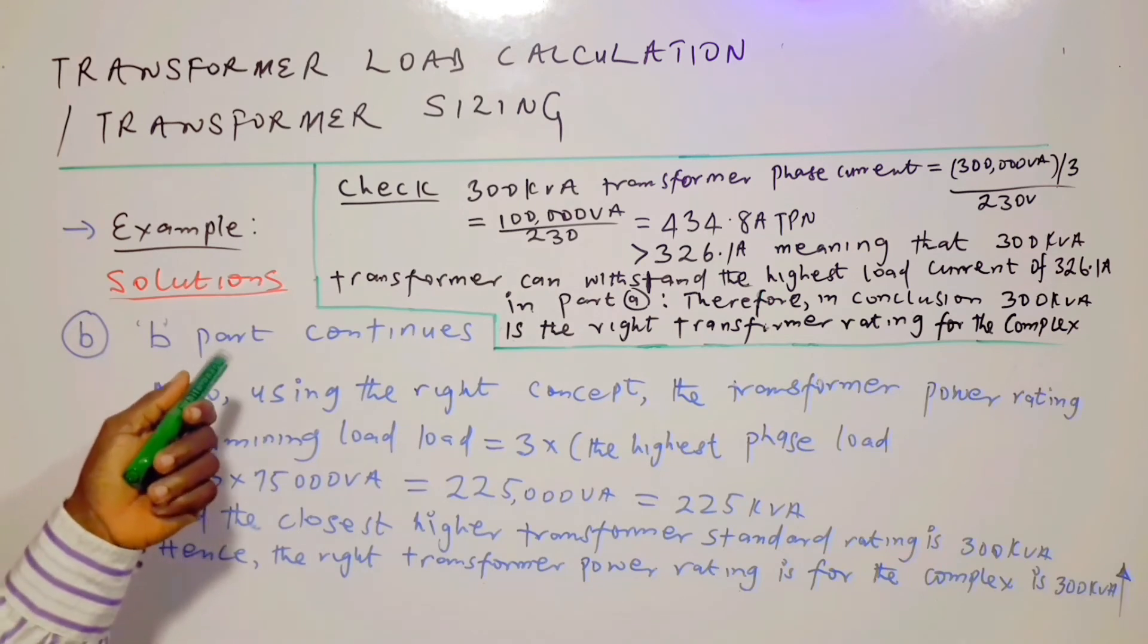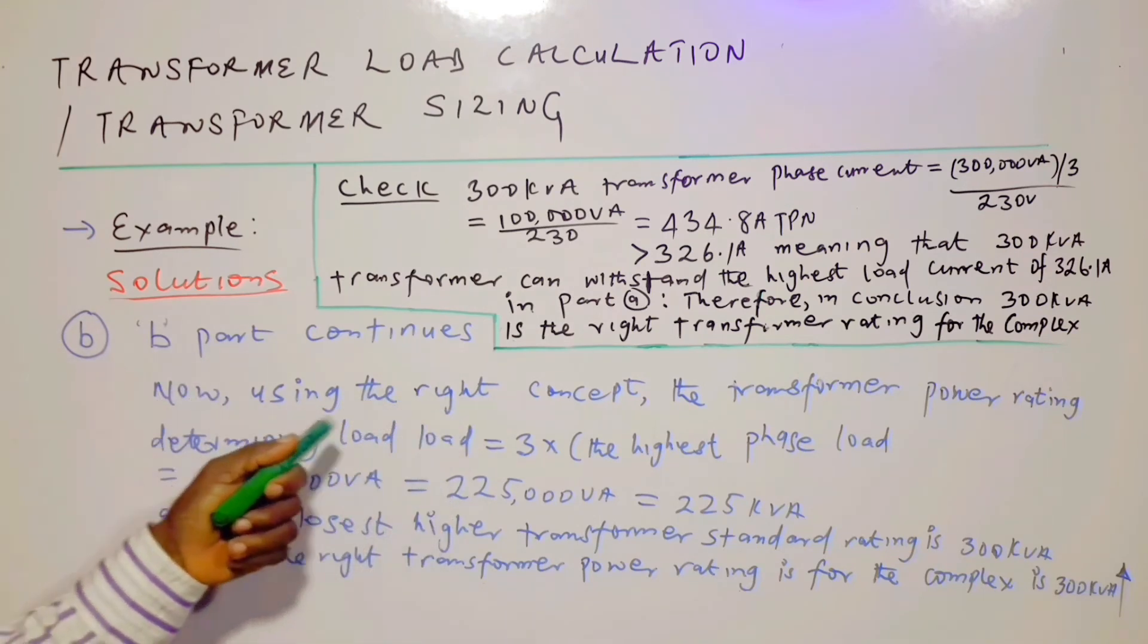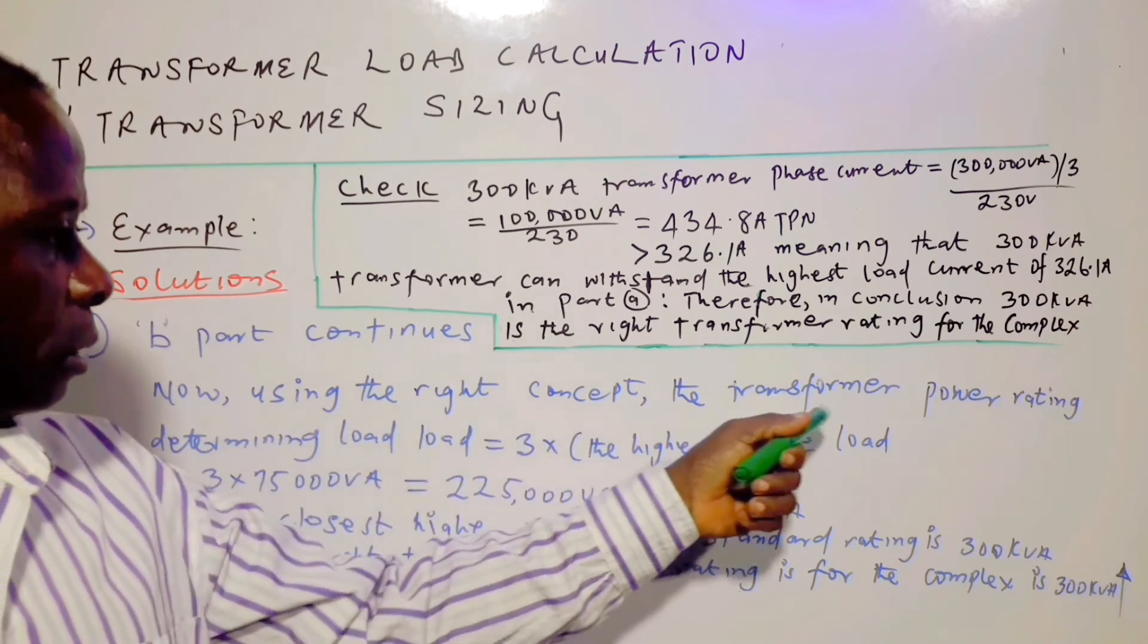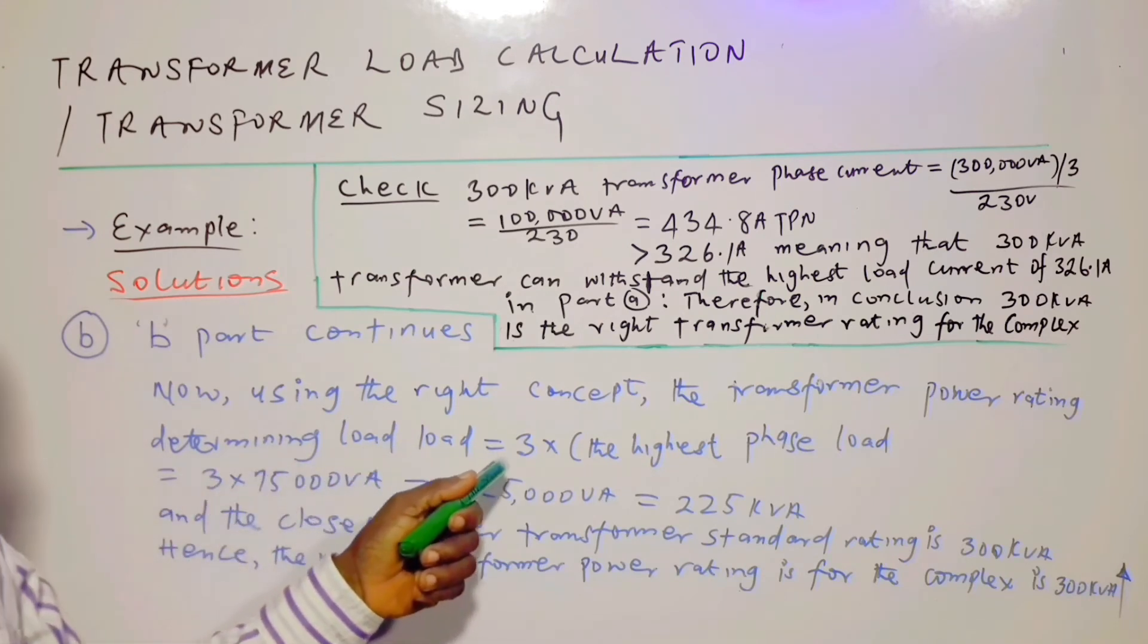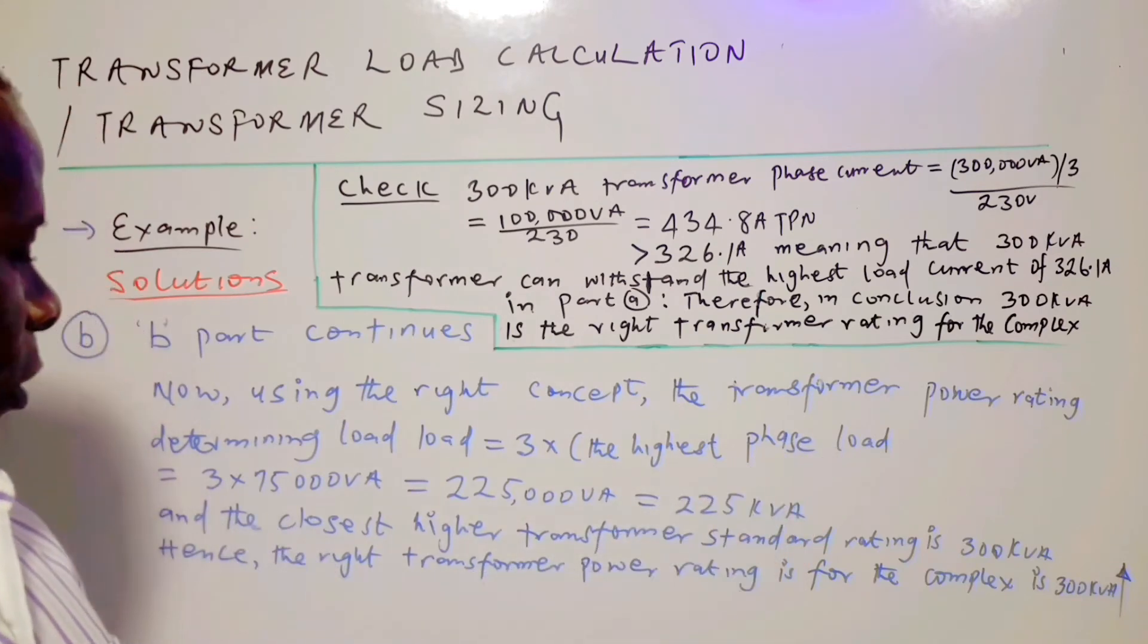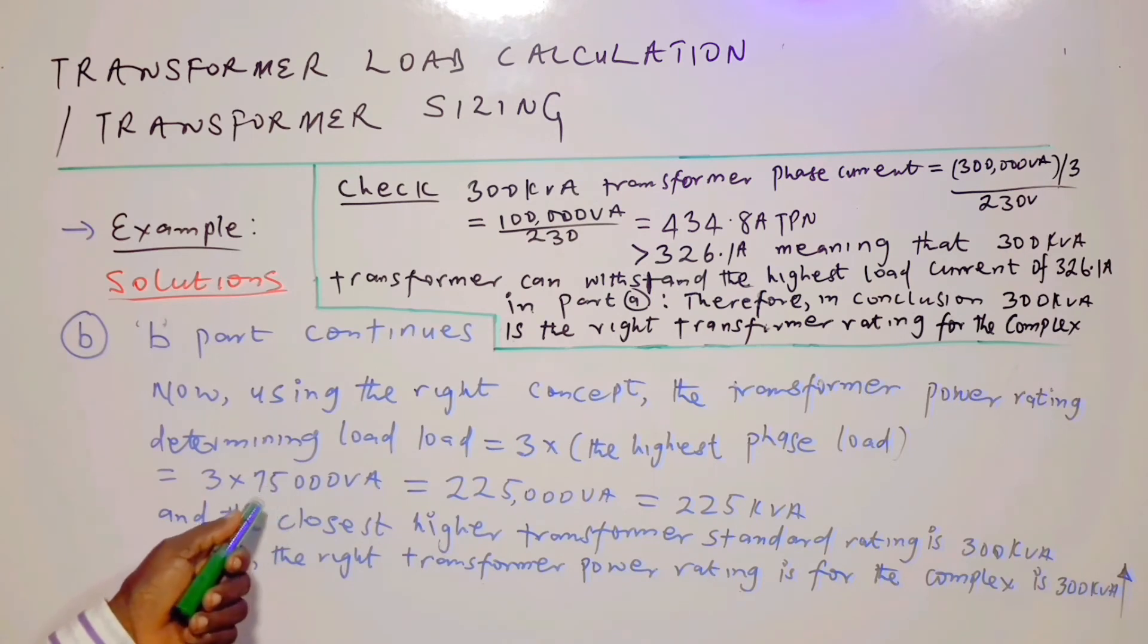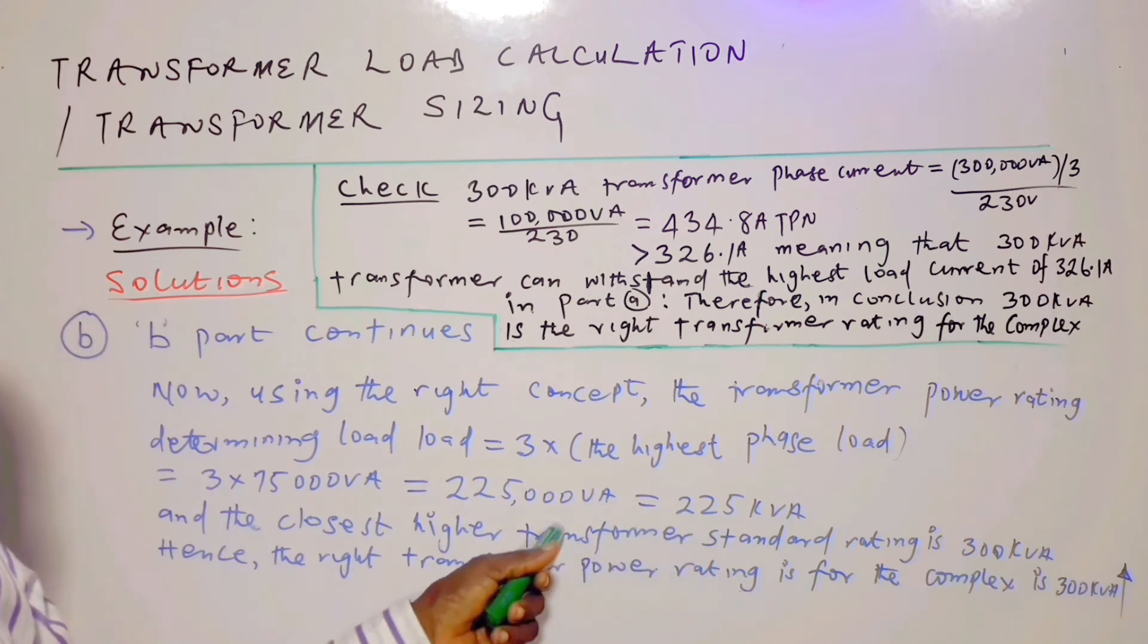Now looking at the right concept, we will use the right concept. The transformer power rating determining load is equal to 3 times the highest phase load. And it is equal to 3 times 75 kVA, which is 75,000 VA. And this is the result.